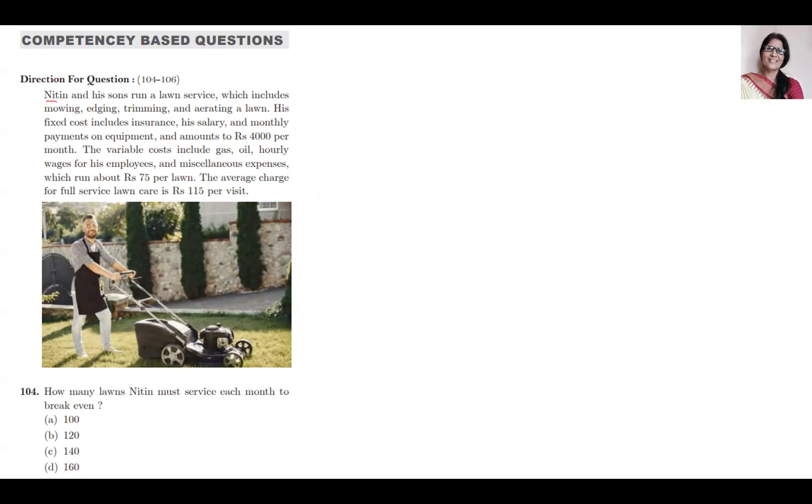There are three questions: 104, 105, and 106. I am not changing the numbers. Nitin and his sons run a lawn service which includes mowing, edging, trimming, and aerating lawns.